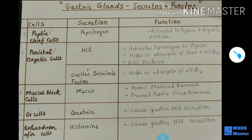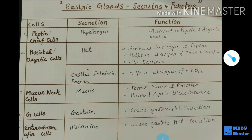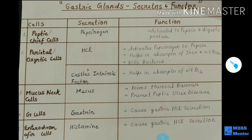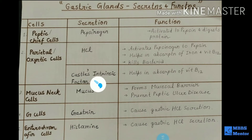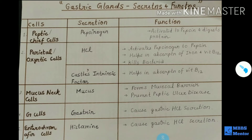Because of HCL, the stomach pH becomes highly acidic. This also helps in disease prevention — it kills bacteria that enter the stomach, so HCL also has an antibacterial function. The second thing that parietal or oxyntic cells secrete is Castle's intrinsic factor.